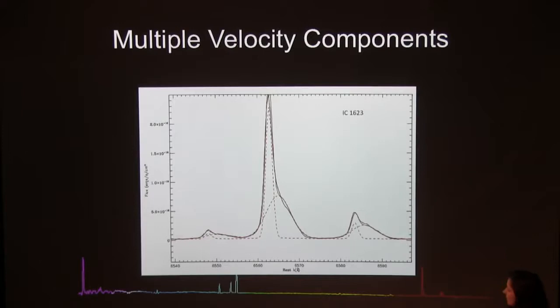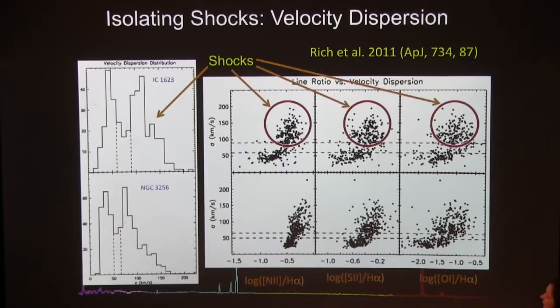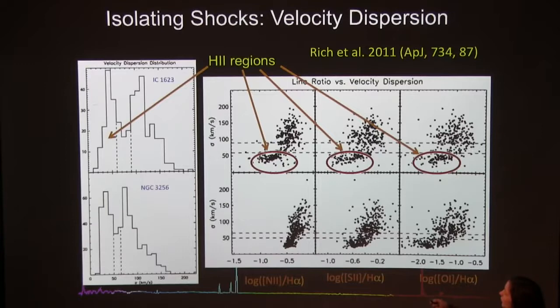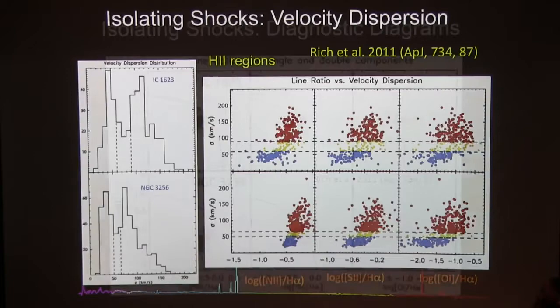We have very high spectral resolution in the red, so we can actually separate emission lines into one and sometimes two or three components — a broad component and a narrow component — for all emission lines, including the weak oxygen-1 line. We can then plot the velocity dispersion of the lines and you can see they're bimodal. We have velocity dispersions of 100 to 200 km/s, typical of slow shocks, and a peak around 40 km/s, really typical of HII regions. So now we can color-code our shocked regions and HII regions and see where they lie on optical diagnostic diagrams.